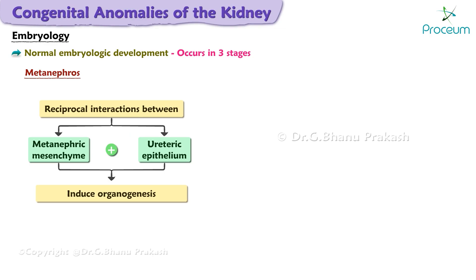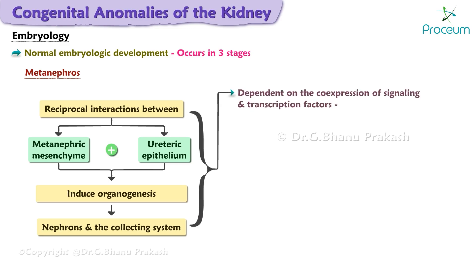Reciprocal interactions between the metanephric mesenchyme and the ureteric epithelium induce organogenesis, resulting in the formation of the nephrons and collecting duct system of the metanephric system. This process is dependent on the co-expression of a number of signaling and transcription factors.